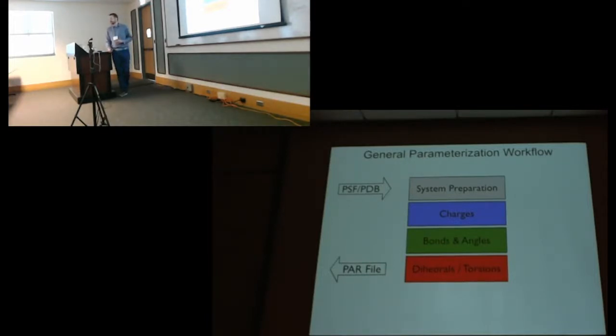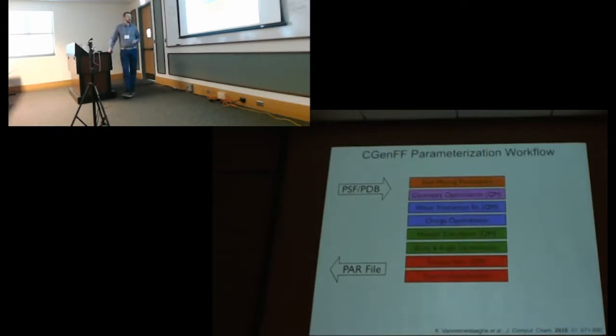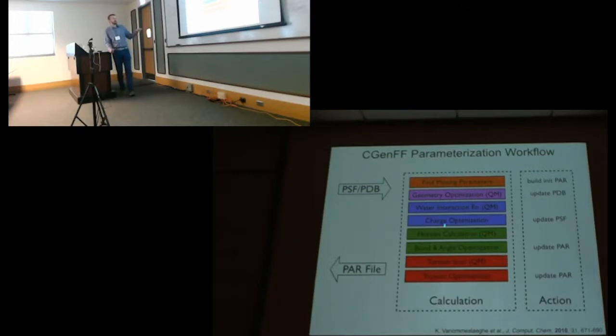Conceptually speaking, it's not that difficult. You have some idea about your topology and coordinates, do some preparation, compute charges, bonds, angles and torsions, and out pops your parameter file. This is what I thought when I showed up here. But then you start reading the literature and looking at the details. Actually, this workflow is significantly more complicated. You've got various quantum mechanical calculations, multi-dimensional optimizations, and every step requires a fairly complicated calculation.